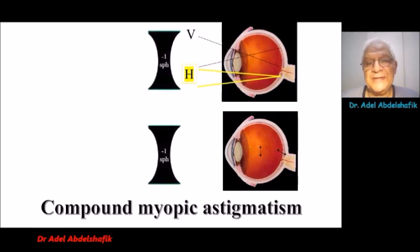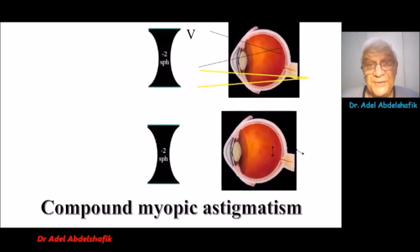Suppose we put a sphere of minus 1, everything will be pushed backward. So, now the horizontal is on the retina. If we put another minus sphere, so the vertical is in front of the retina.